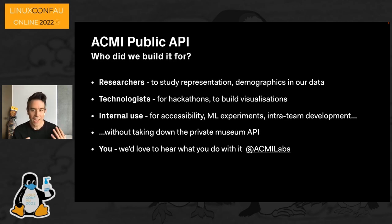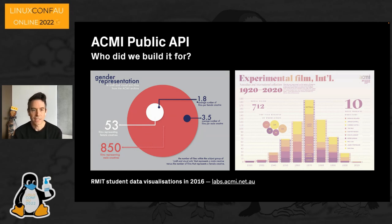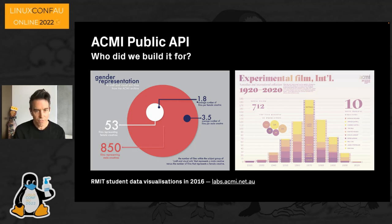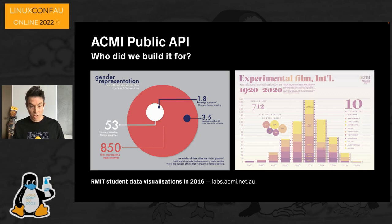We also built it for you, so we'd love to hear what you think of it, what we can improve, and most importantly what you build with it. Here are a couple of examples from RMIT students who used our 2016 metadata — exploring gender representation on the left, and the country of origin of works in our collection on the right. They generated these images using the metadata spreadsheet we released back then, but with the public API these could now be live and interactive.